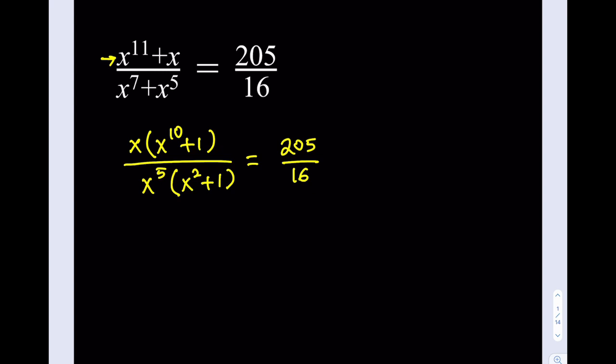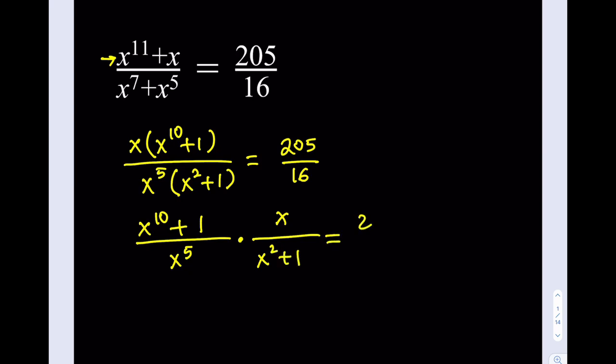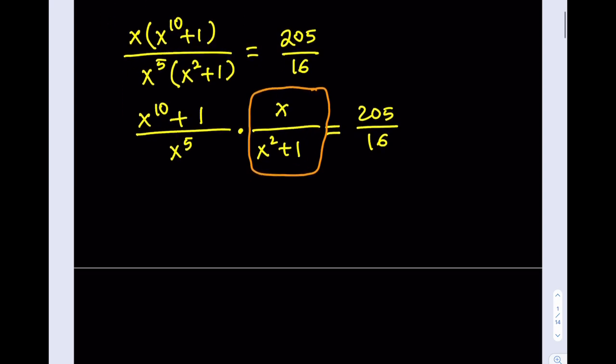At this point you may be tempted to cancel out the x's — and x does not equal 0, so we can do it — but it's not really going to help us a lot. So I'm going to separate this into two expressions, and instead of dividing, I'm going to multiply both sides by the reciprocal of the denominator expression. The reciprocal is x squared plus 1 divided by x, giving us x to the power 10 plus 1 over x to the 5th, equal to 205 divided by 16 multiplied by x squared plus 1 over x.